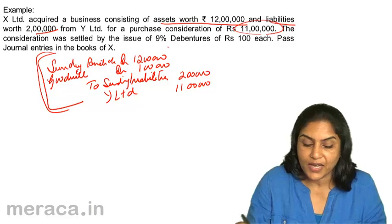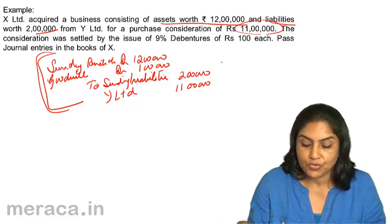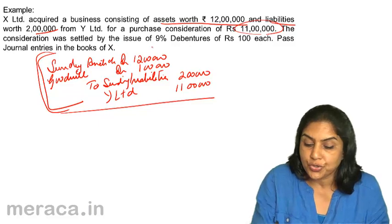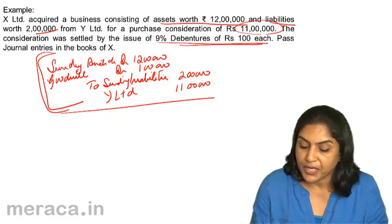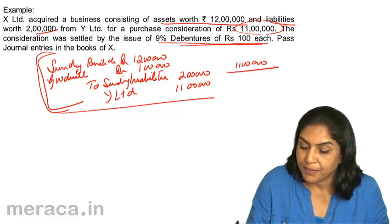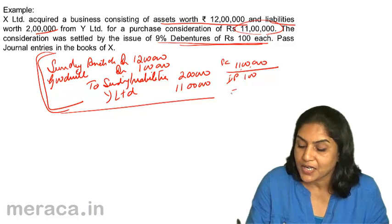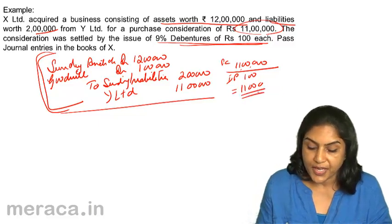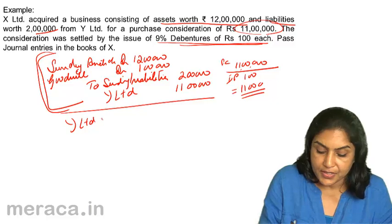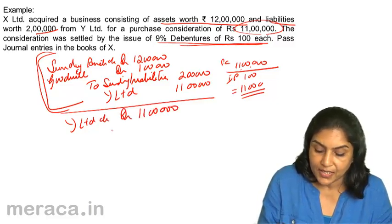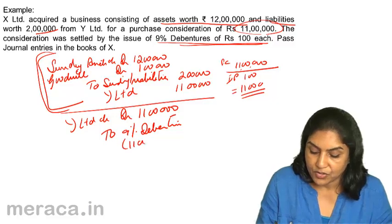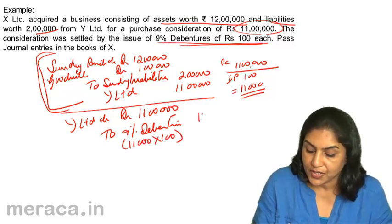Next, Y Limited is issued 9% debentures of ₹100 each. Number of debentures = purchase consideration ÷ issue price = 11,00,000 ÷ 100 = 11,000 debentures. Entry: Y Limited account debit ₹11 lakh, to 9% Debentures — 11,000 debentures × ₹100 each = ₹11 lakh.